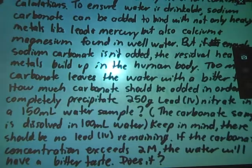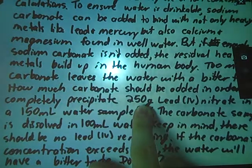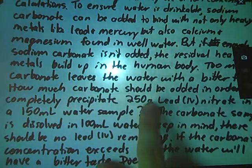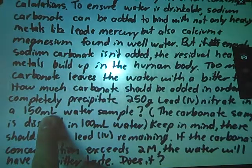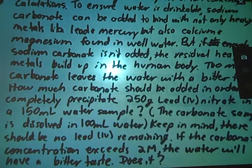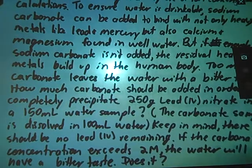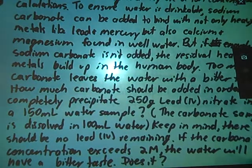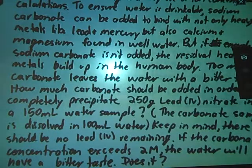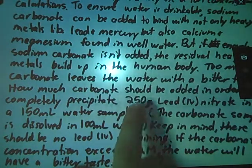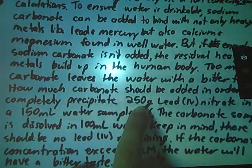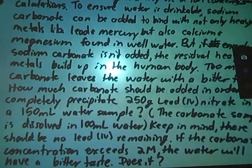Keep in mind there should be no lead IV remaining. So I want to make sure that this is my limiting reagent, that all of this is used up. Since they gave me the grams, I don't really care about the volume. I only care about the grams here. The final part says if the carbonate concentration exceeds two molar, the water will have a bitter taste. Does it? So two things I need to figure out: how much sodium carbonate do I need to precipitate all of this lead, and how much carbonate ion is left over in my solution?